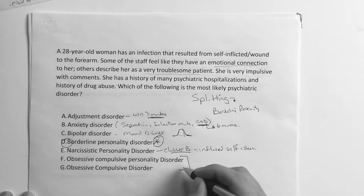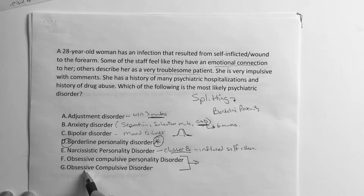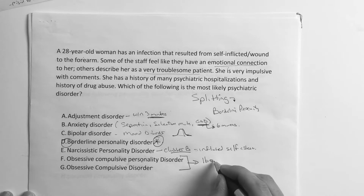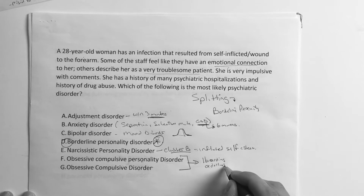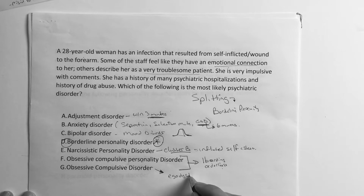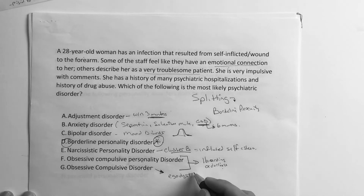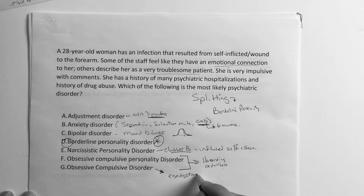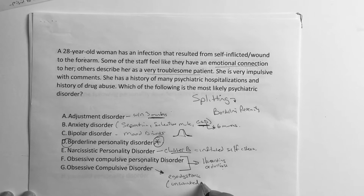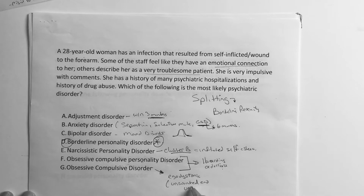Here's an important teaching point: obsessive compulsive personality disorder versus obsessive compulsive disorder. They both involve hoarding and orderliness and can look the same. But the difference is that the person who has OCD knows it's ego dystonic — meaning the behavior is unwanted. They feel it's unhealthy and they want to stop. It's like, 'I know this isn't good.'